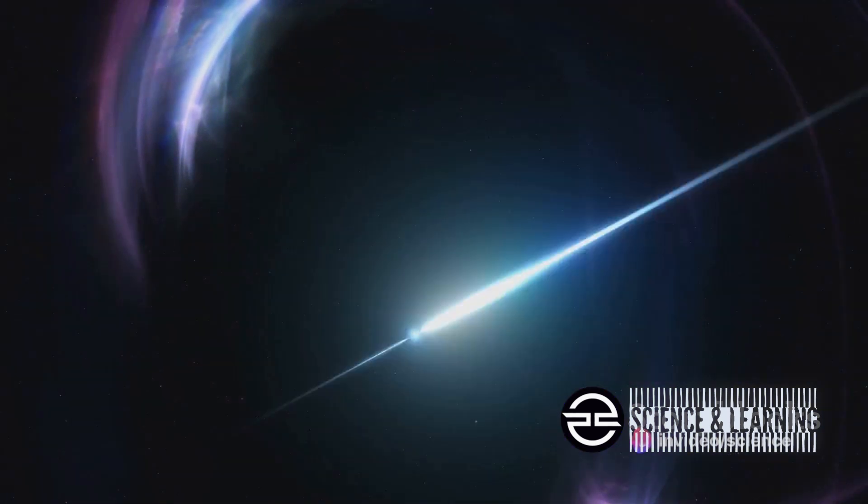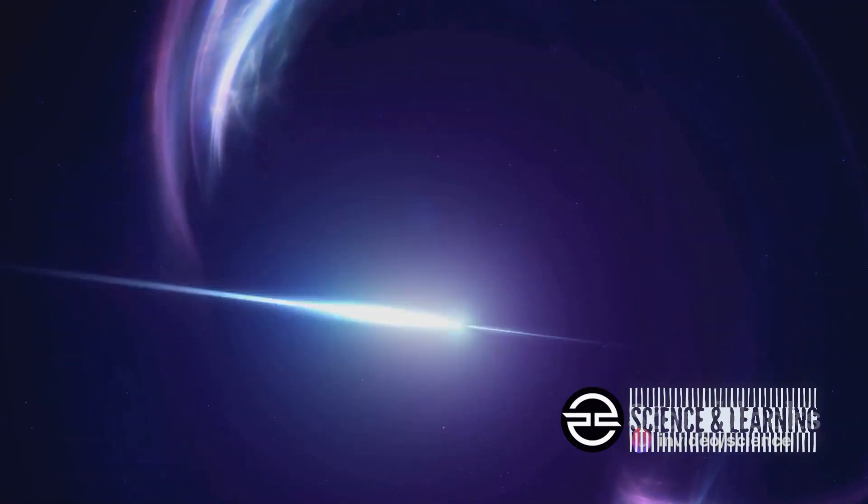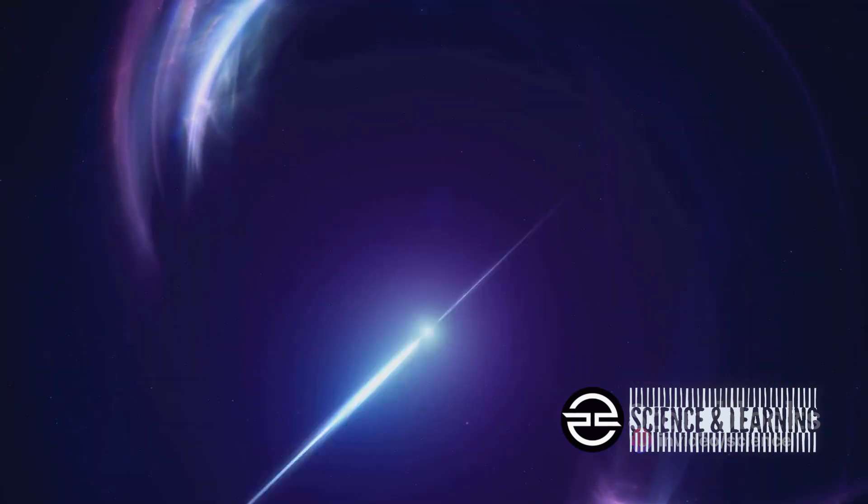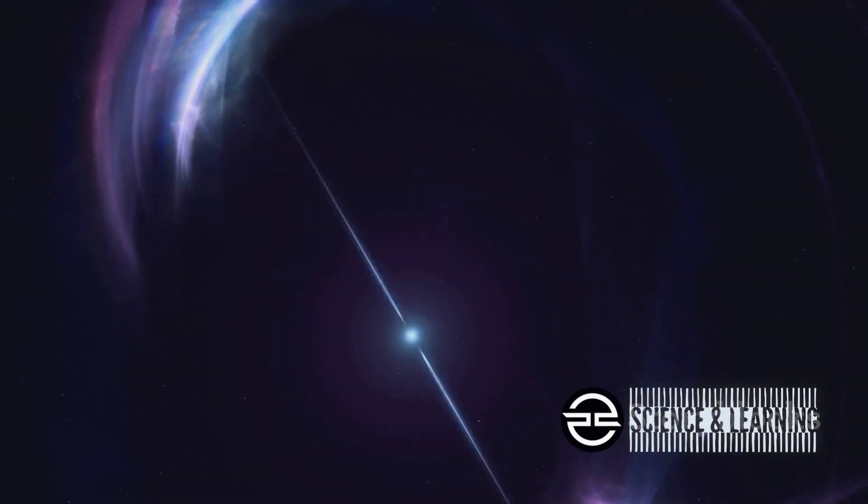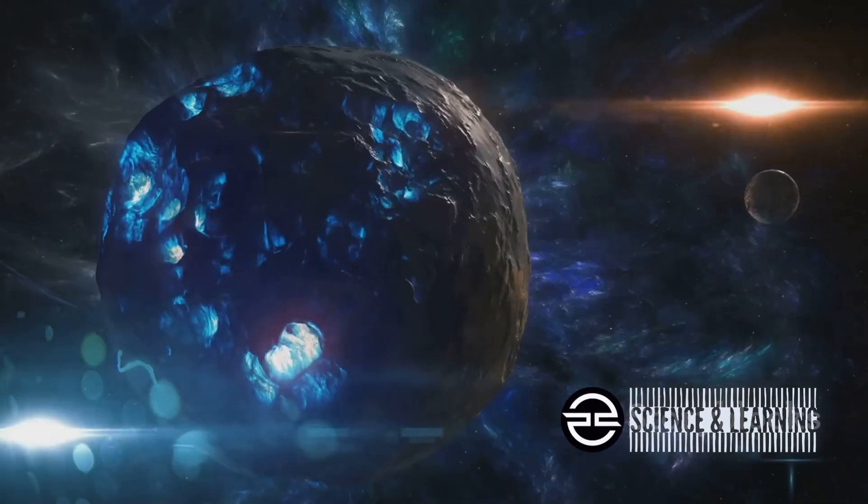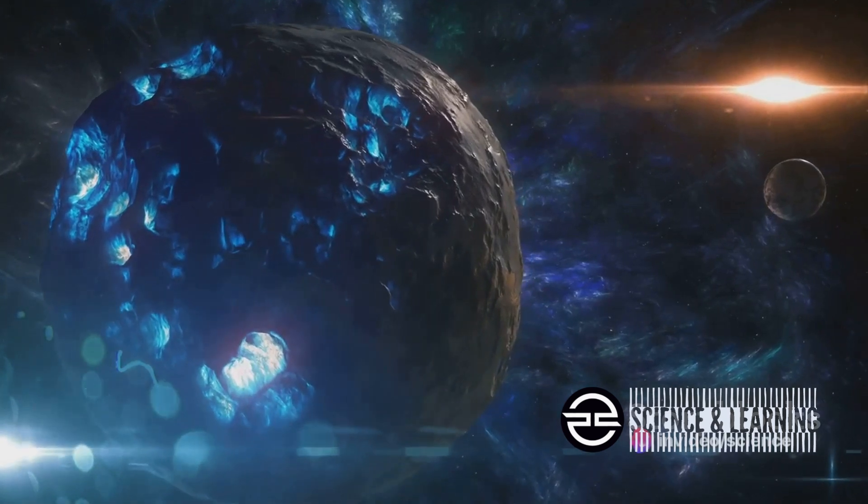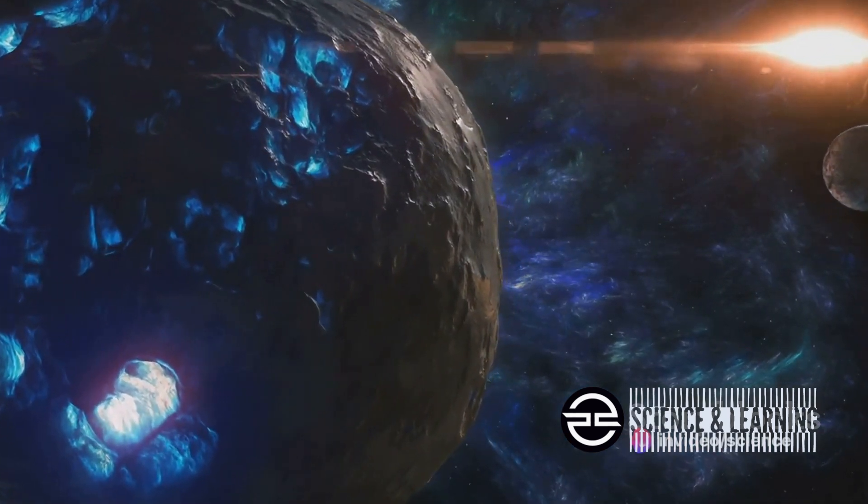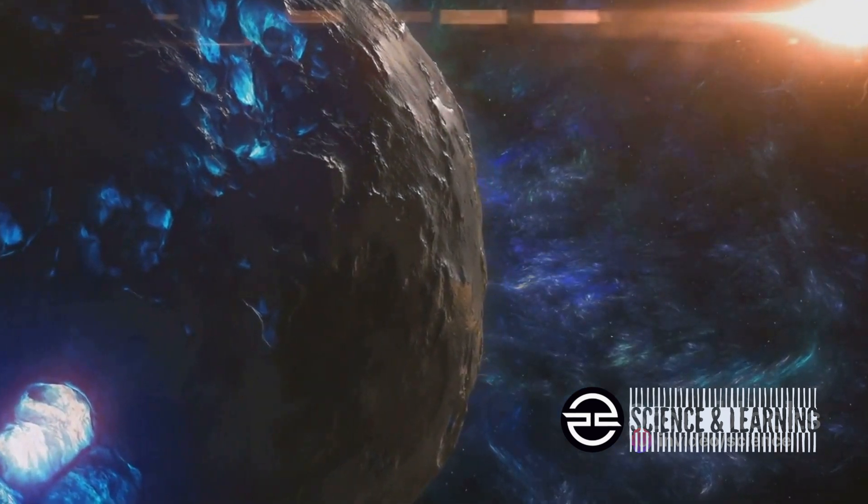Neutron stars are the remnants of massive stars that have exploded in a supernova. They're incredibly dense, packing more mass than our sun into a sphere about 20 kilometers in diameter. To put that in perspective, a sugar cube-sized amount of neutron star material would weigh as much as Mount Everest. This discovery also sheds light on the nature of supernovae themselves.